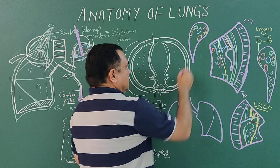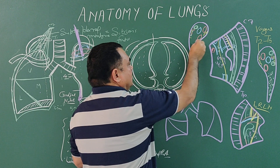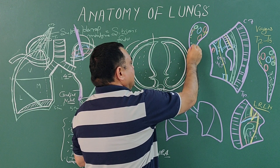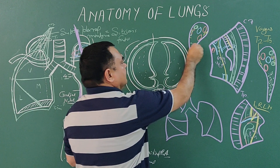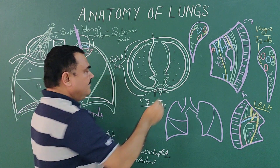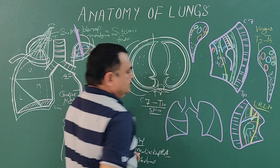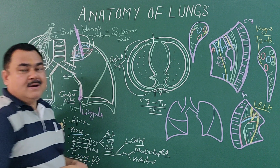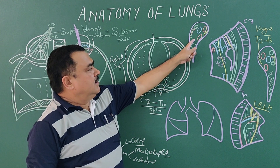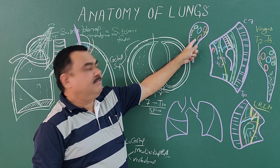Here lies loose connective tissue and lymphatic channels, and some lymph nodes — bronchopulmonary lymph nodes. This is the root of the left lung.